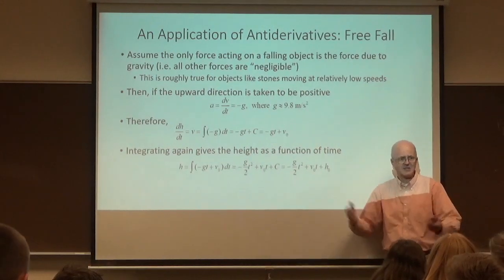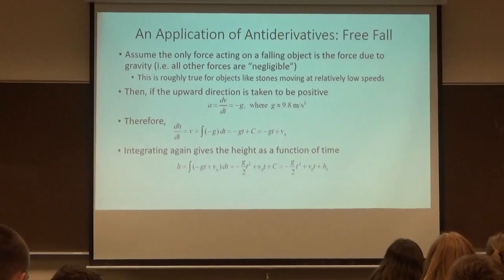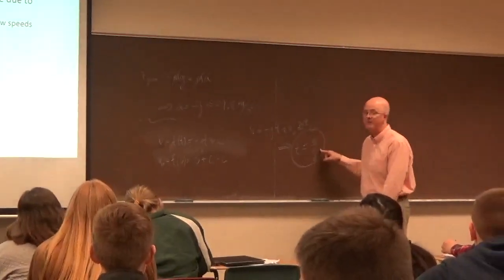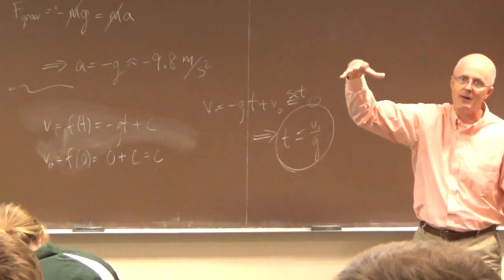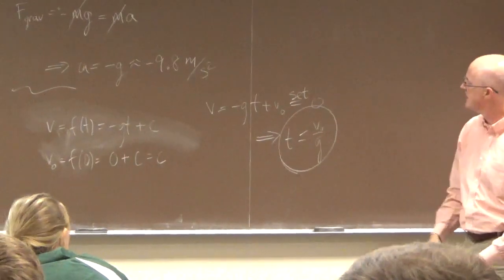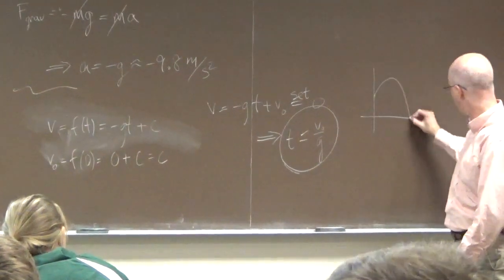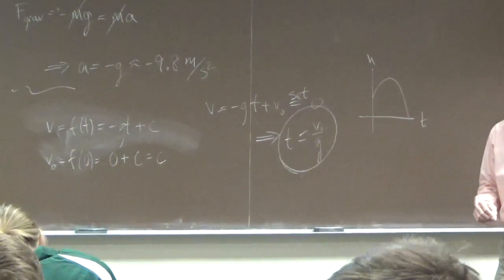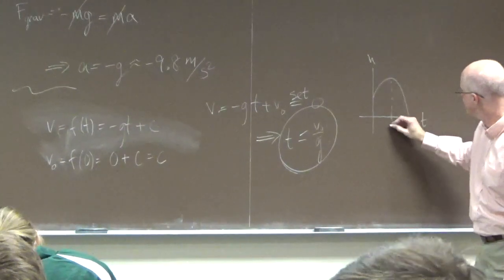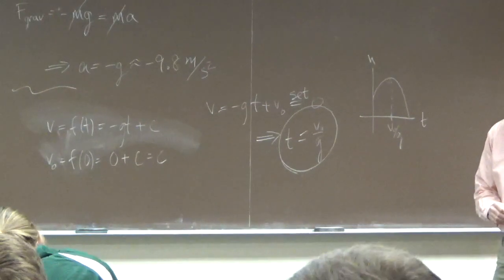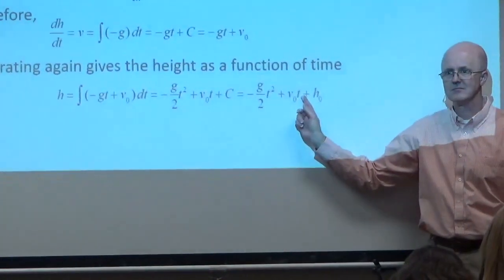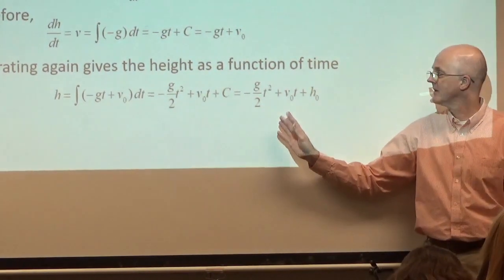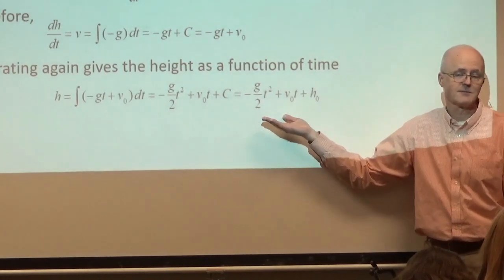So if you wanted to find the maximum height — which I could ask you to do on the exam — you take the time of maximum height, v₀/g, and plug it into the height function. The graph of h with respect to t looks like an upside-down parabola, with the vertex at t = v₀/g. You plug that into the height function to find the maximum height. You should be able to handle it in this general situation and also with specific numbers if I give them to you.